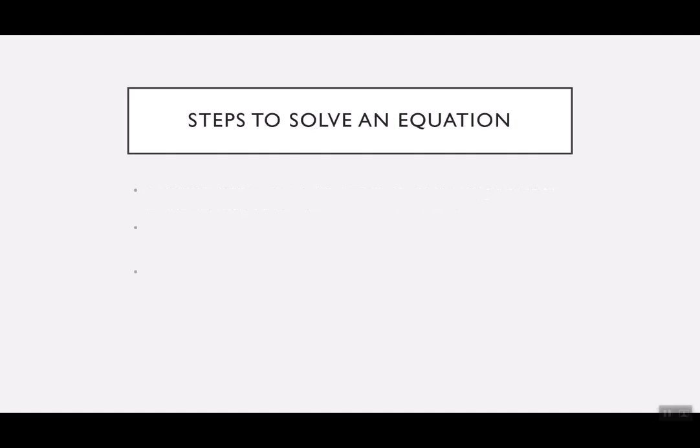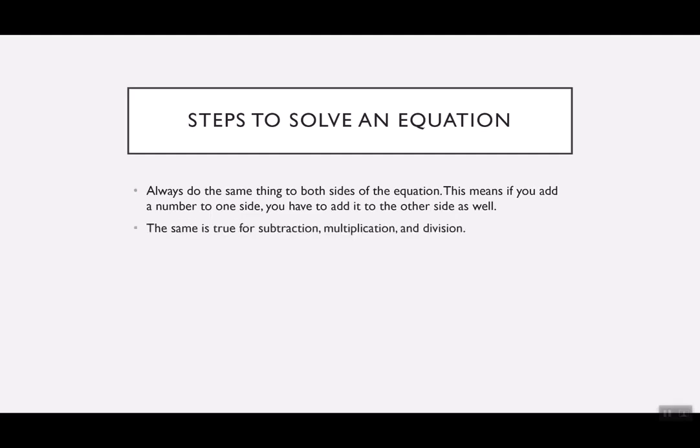As we go to solve an equation, there are some basic steps that we want to do. The most important thing is that we always do the same thing to both sides of the equation. So if you add a number to one side, you need to add it to the other side as well. That's also true for subtraction, multiplication, and division. Just be consistent.